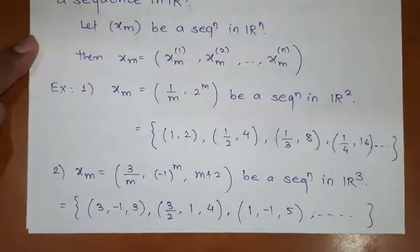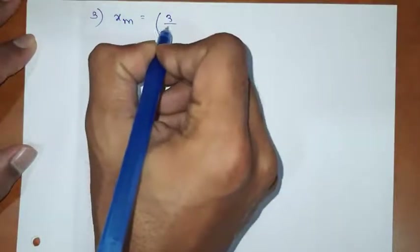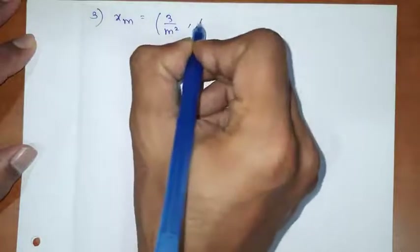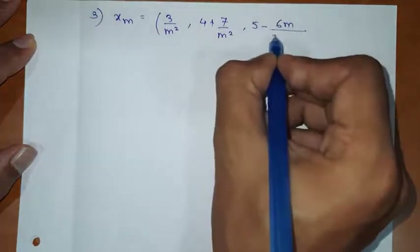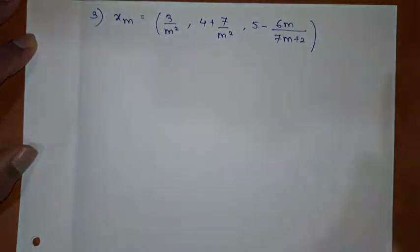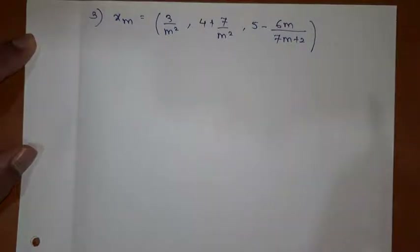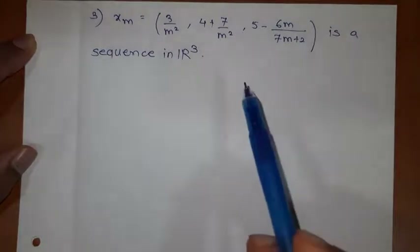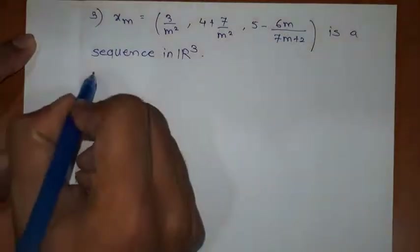Is it clear to you? Now we will discuss a few more examples, but we will not discuss in detail — I will simply give the examples. So the third example: I am defining xm equal to (3/m², 4 + 7/m², 5 - 6m/(7+2)). This is the sequence. Tell me how many components: 1, 2, and 3 — so this is a sequence in R3. For practice, you can put values of m and find the first three or four terms.